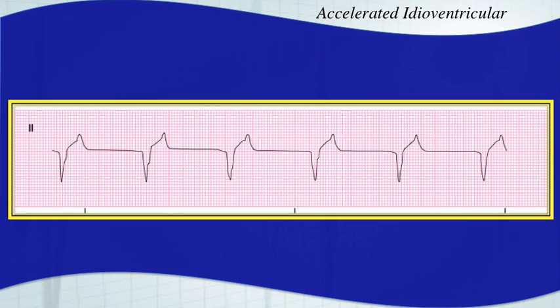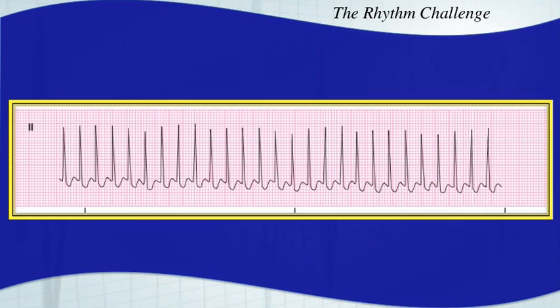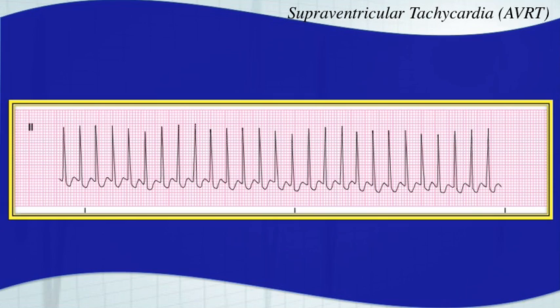You might note this one looks very fast. This is another SVT — this is AV nodal reentry tachycardia. This probably requires synchronized cardioversion. That is a fast rhythm right there. Your patient is not going to be appreciating it very much.